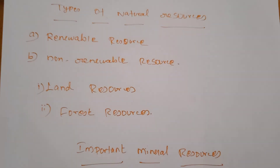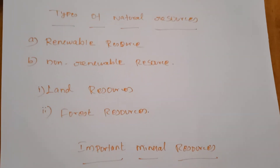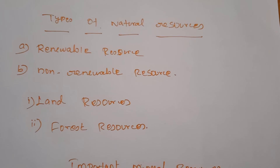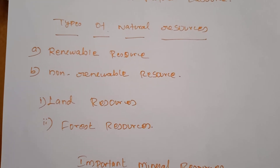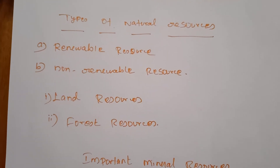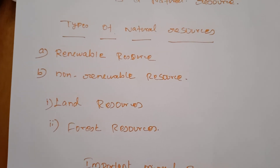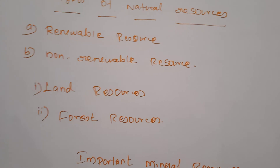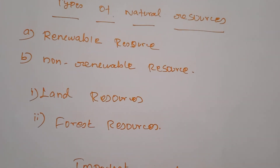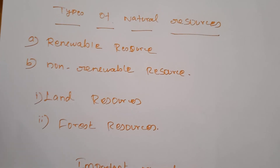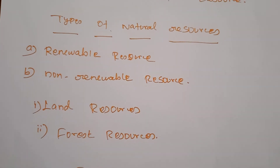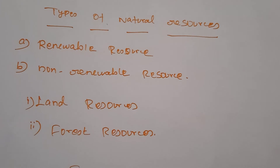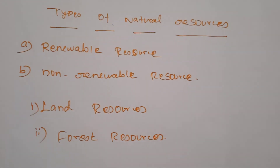Natural resources can be classified into two types. The first is renewable resources — resources that can be regenerated within a given period of time. Examples include forest, wildlife, wind, biomass, tidal energy, and hydro energy. The second is non-renewable resources, which cannot be regenerated once used. Examples include fossil fuels, coal, petroleum, and minerals. Once taken from nature and used, they cannot be regenerated.